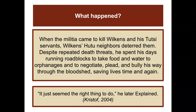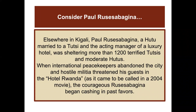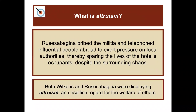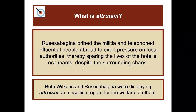Later, he explained: it just seemed like the right thing to do. Elsewhere in Kigali, a Hutu married to a Tutsi and the acting manager of a luxury hotel was sheltering more than 1,200 terrified Tutsis and moderate Hutus. When international peacekeepers abandoned the city and hostile militia threatened his guests at the Hotel Rwanda — as it became known in a 2004 movie — the courageous man began cashing in past favors, bribing the militia and telephoning influential people abroad to exert pressure on local authorities, thereby sparing the lives of the hotel's occupants despite the surrounding chaos.